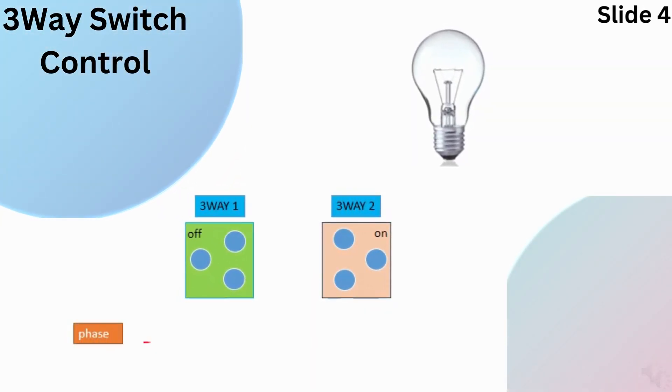Here switch 1 is off and switch 2 is on, so there is no contact between them and the light will remain off.